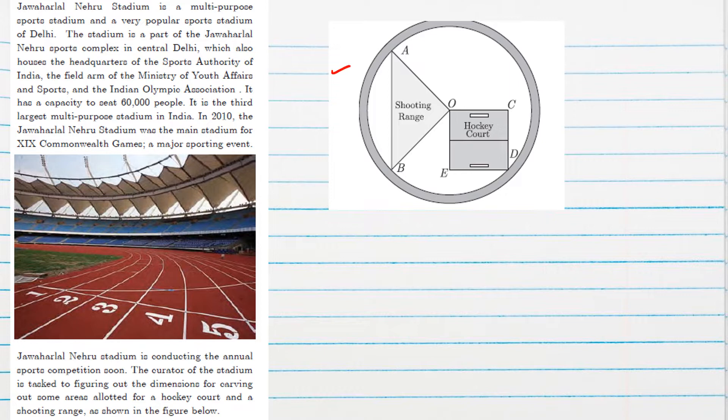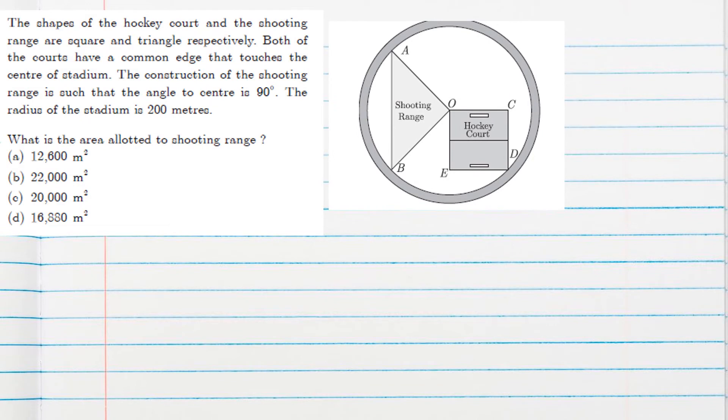This is the actual diagram of the stadium where for shooting range, they have given one triangular region. For hockey court, they have given a square region. The shape of the hockey court and shooting range are square and triangle. Both courts have a common edge that touches the center. The construction of the shooting range is such that the angle is 90 degrees. This angle is 90 degrees and the radius of the stadium is 200. So OA length is 200, and similarly, OB length is also 200.